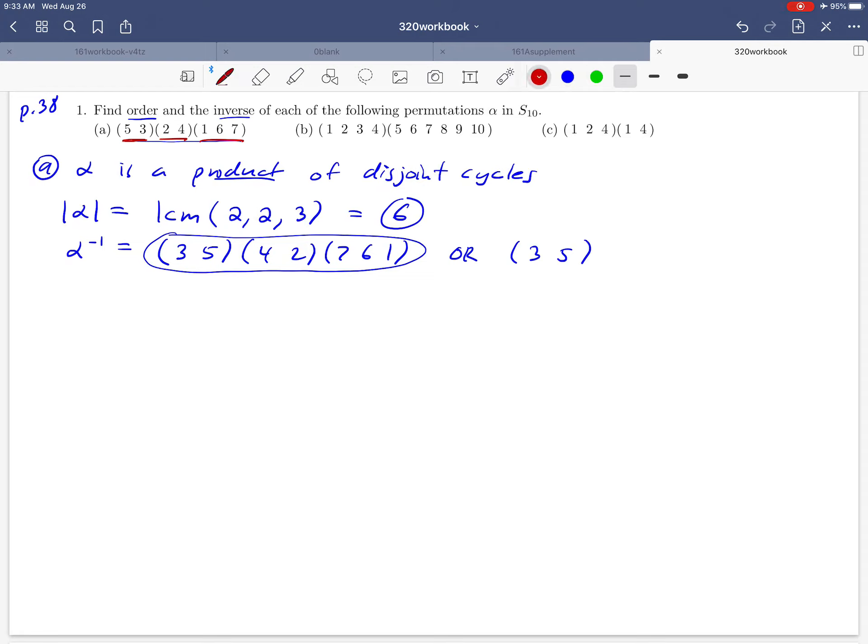Okay so you could write this in different forms. So (3, 5). Maybe you prefer to start with the smallest number in your cycle. Okay (4, 2). So that's equivalent to (2, 4) because after all that cycle just flips 2 and 4 around. Doesn't matter which of those two numbers we start with.